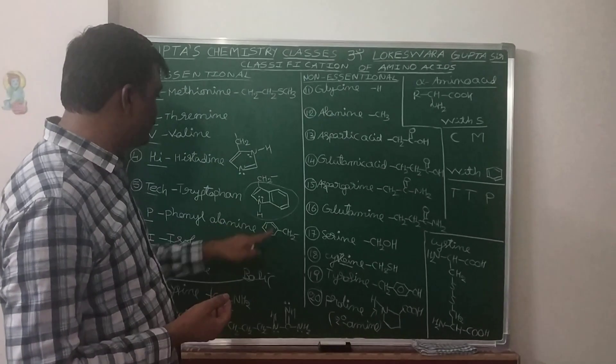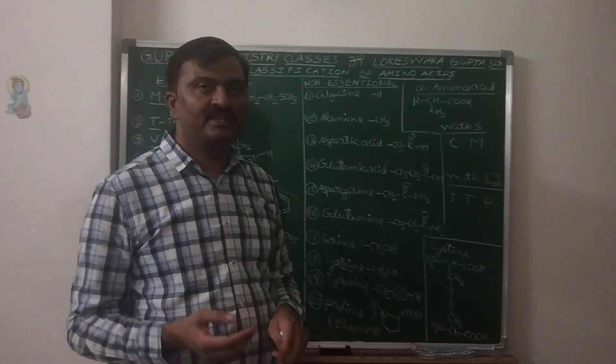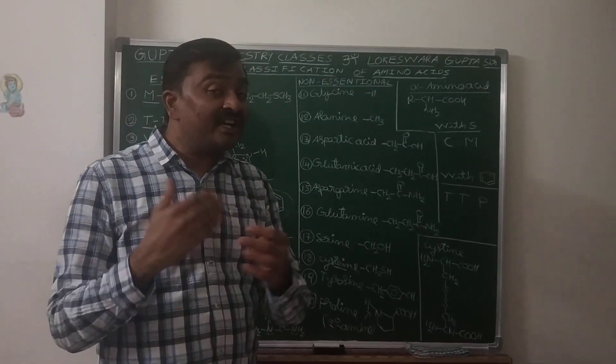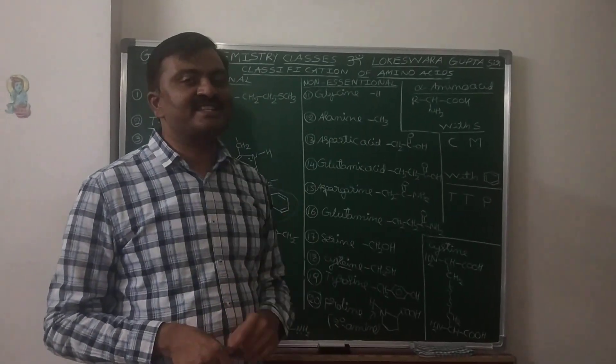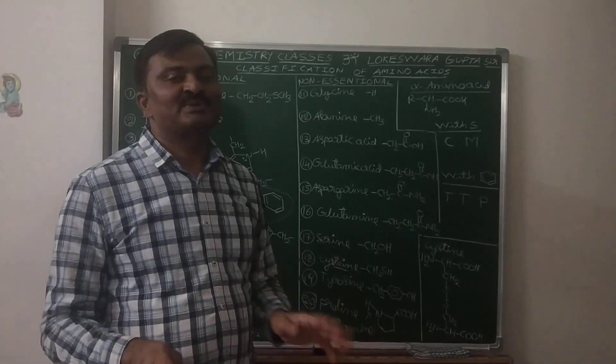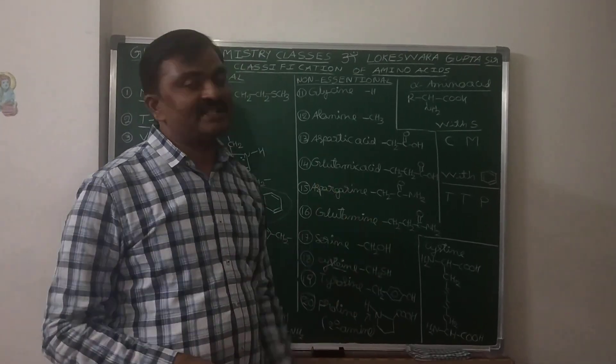Proteins having amino acids with benzene ring, these amino acids only give yellow color. That is due to the nitration of the benzene ring. It is called xanthoprotein test. So this is the classification students.